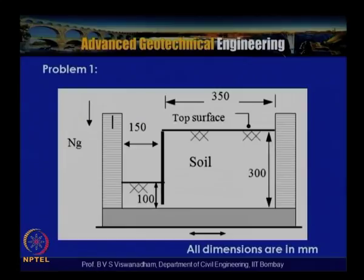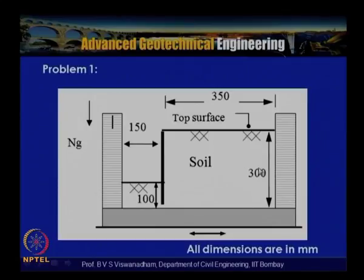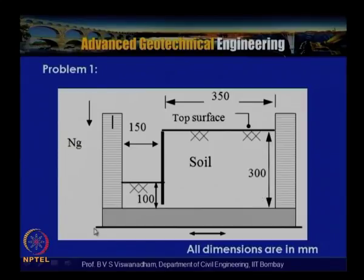The figure for problem 1 shows all dimensions in millimetres — a typical laminar container with an embedded depth of 100 mm, height 300 mm, breadth 300 mm, and length 350 mm. By knowing these dimensions and the bulk unit weight of soil, plus the container and accessories mass given as 300 kg, the entire mass on the swing basket allows calculation of the dynamic force component.